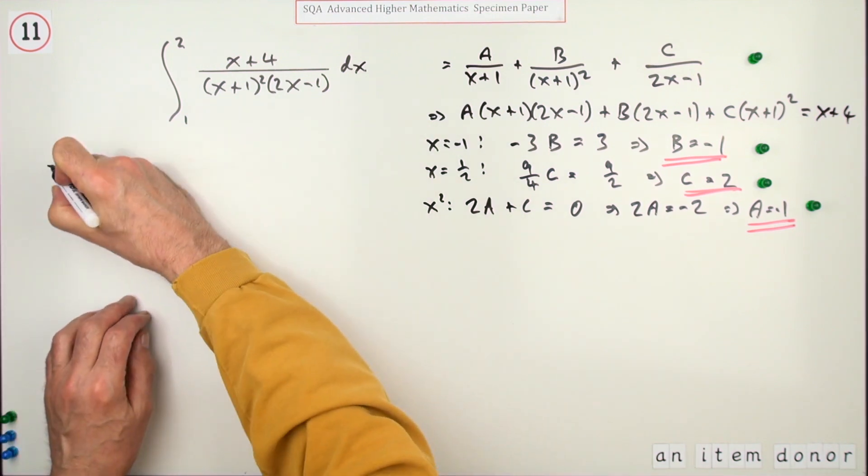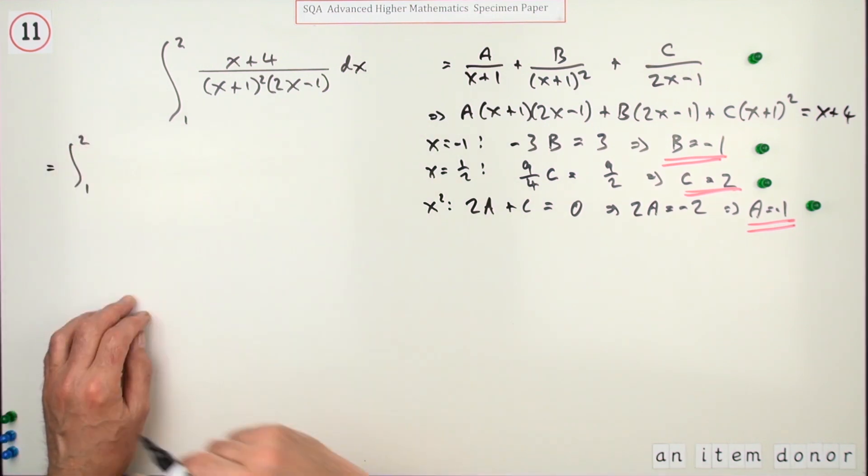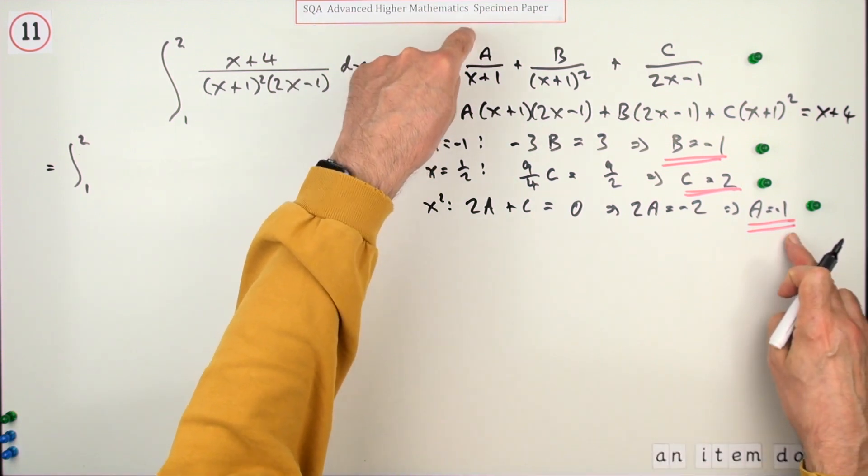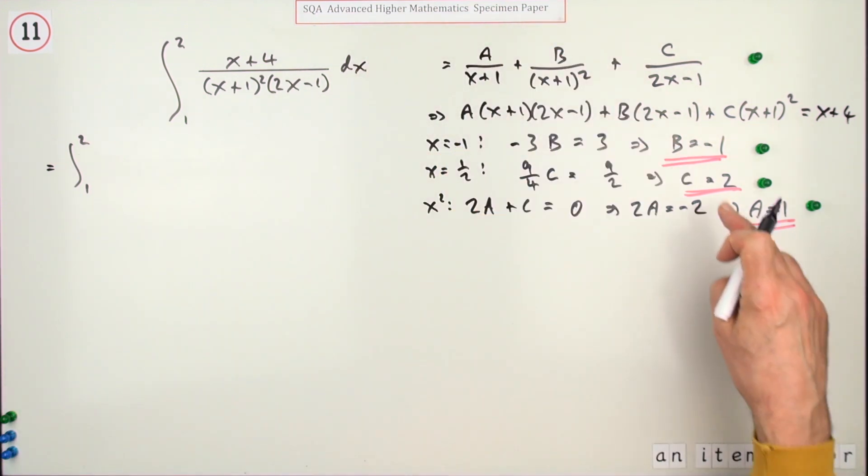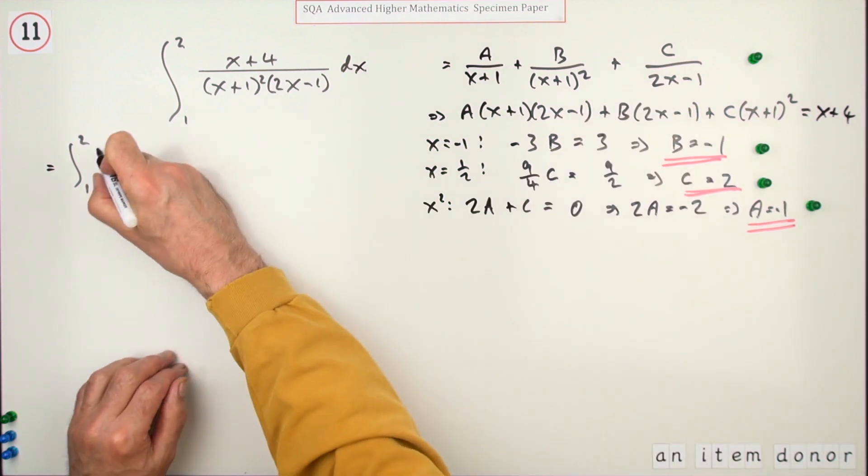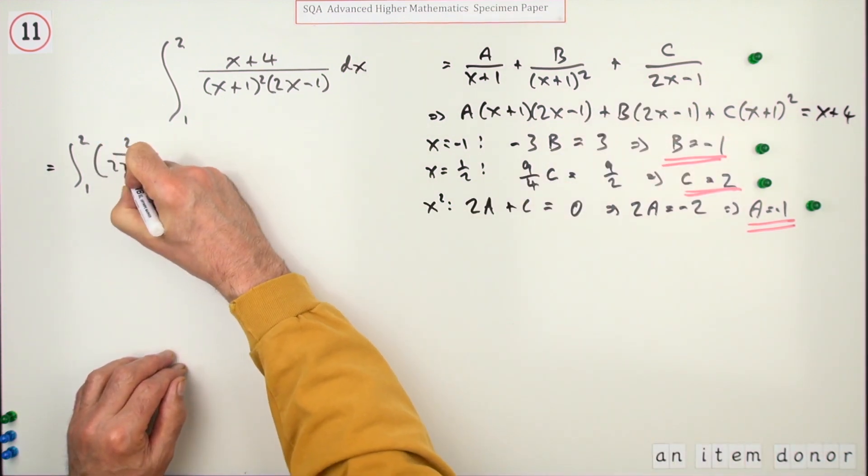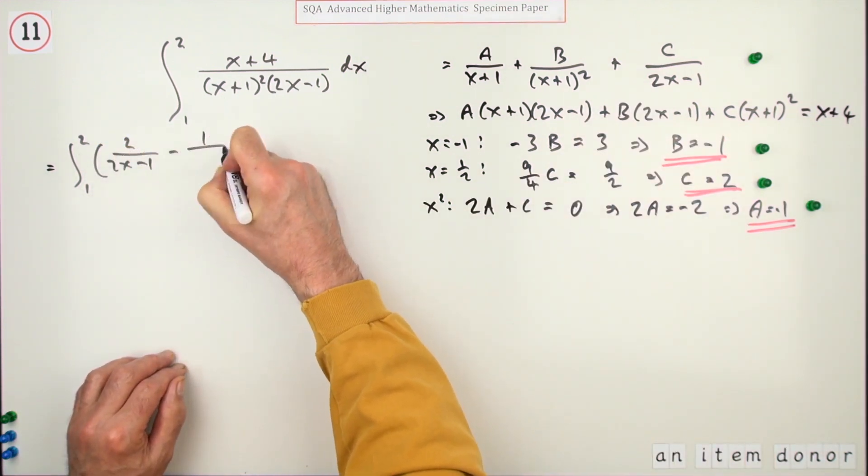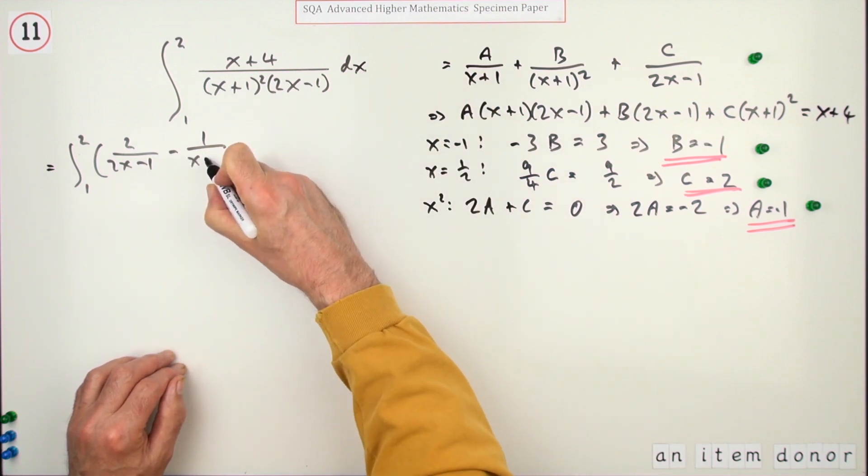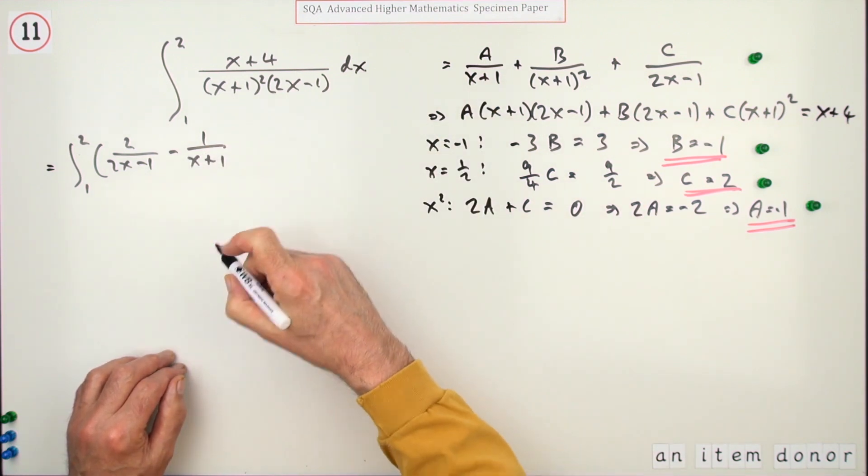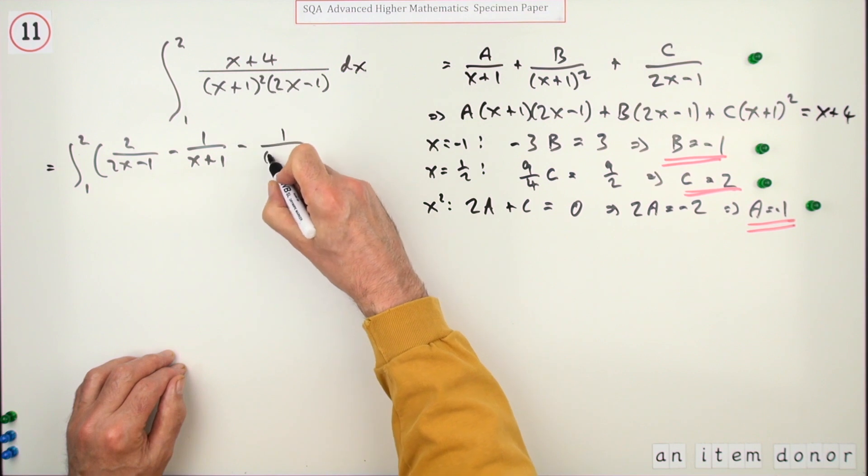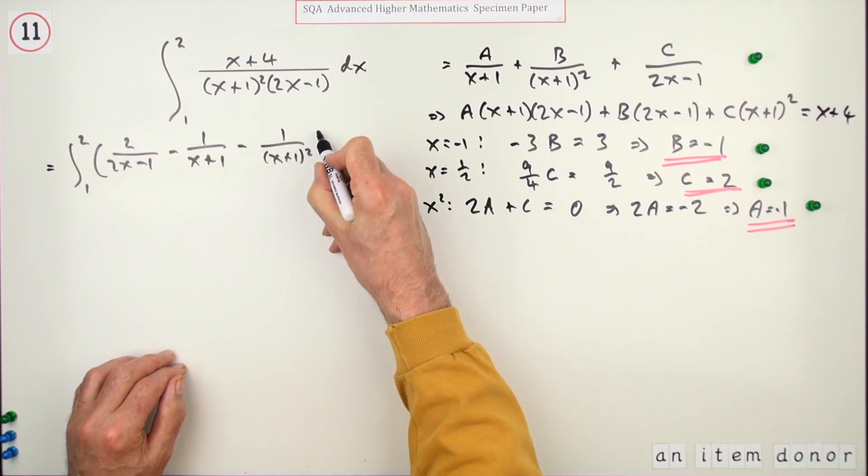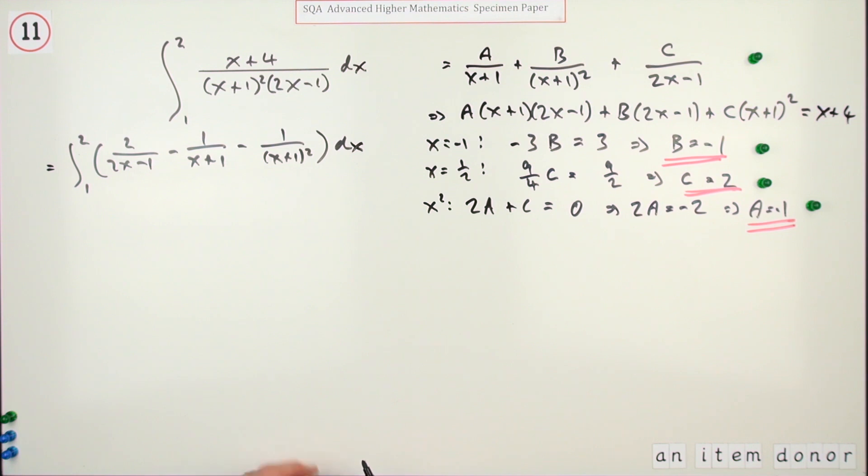Now it's just a case of putting it all together. I'll start with the C term first, so it's 2/(2x-1), and then it's minus. Now I'll go back to my A, which was -1/(x+1), and B was also -1/(x+1)². Looking at that, I've got log, log, and that's just a power term, power -2.